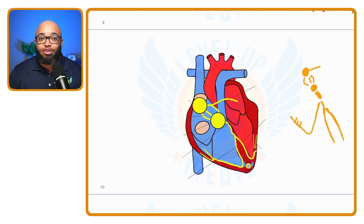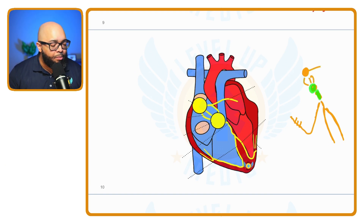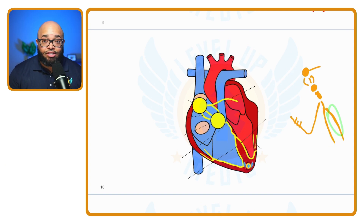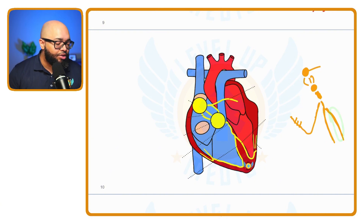Here's a simplified drawing without all the labels: we have an SA node, Bachmann's bundle, bundle of His, left bundle branch with Purkinje fibers, and right bundle branch. Remember the left bundle branch is broken down into two fascicles — an anterior fascicle supplied by the left coronary artery, and a posterior fascicle supplied by the right coronary artery. That was cardiac conduction.